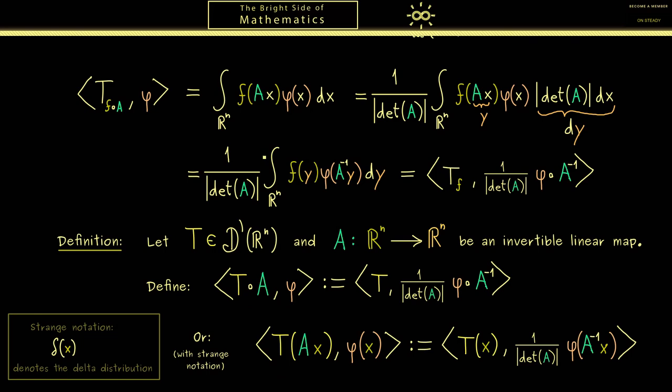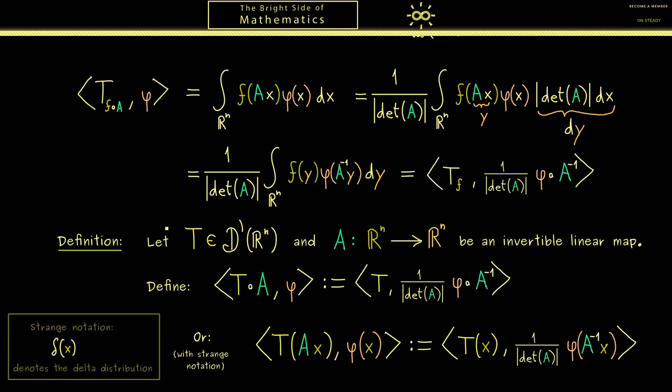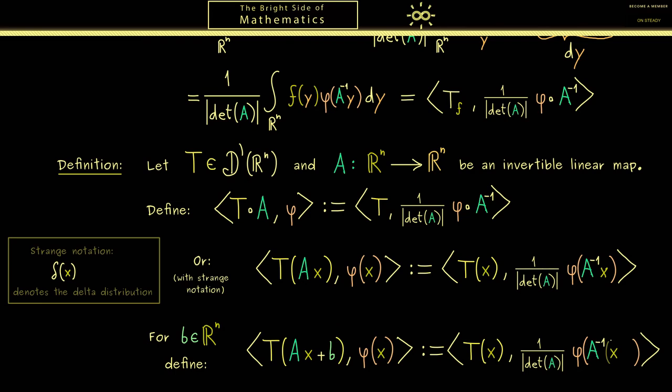Okay, now by looking back at our motivation here, we see that we can also consider other coordinate transformations. For example, we could include a translation as well. This means that we shift all the coordinates by a vector b. With this we can define a new distribution T of Ax + b. And now by the same idea as above, we just shift the translation to the test function. In other words, there we have A inverse of x minus b.